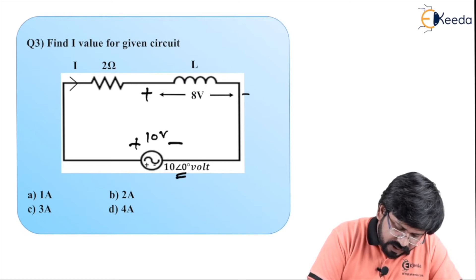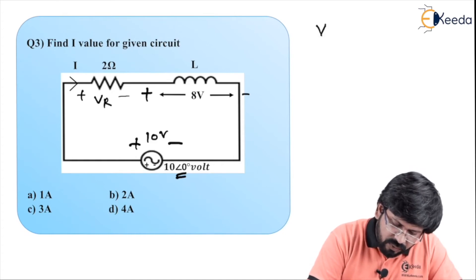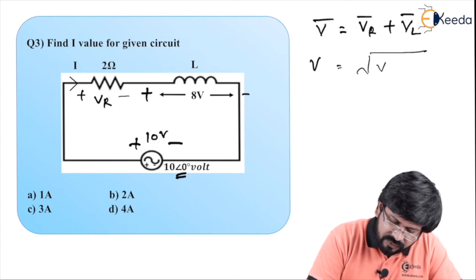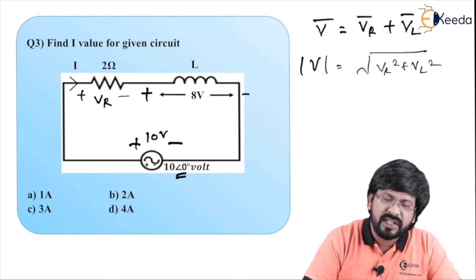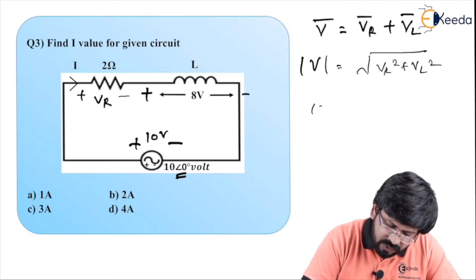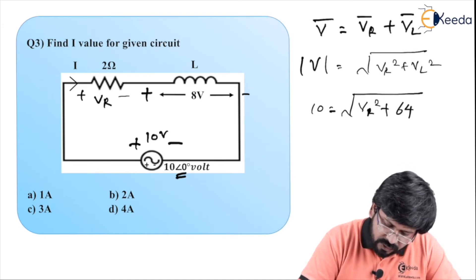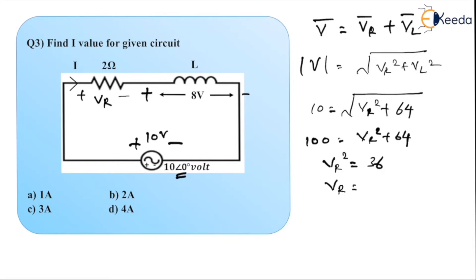Suppose this voltage is V_R, the voltage across R. We know that total voltage is the vector addition of V_R and V_L, or magnitude-wise: under root of V_R squared plus V_L squared. The supply voltage magnitude is 10 volt. So 10 equals under root of V_R squared plus V_L squared. Since V_L is 8 volt, 8 squared is 64. Squaring both sides: V_R squared plus 64 equals 100, giving V_R squared equals 36, so V_R equals 6 volt.